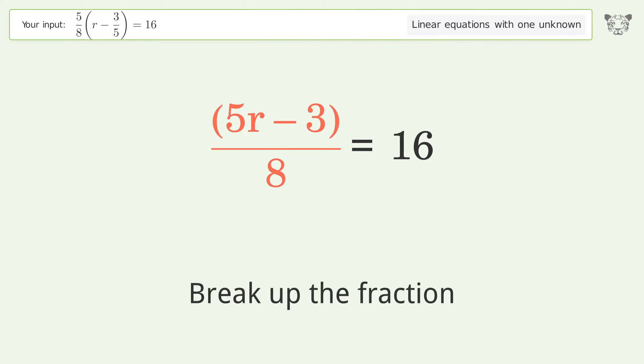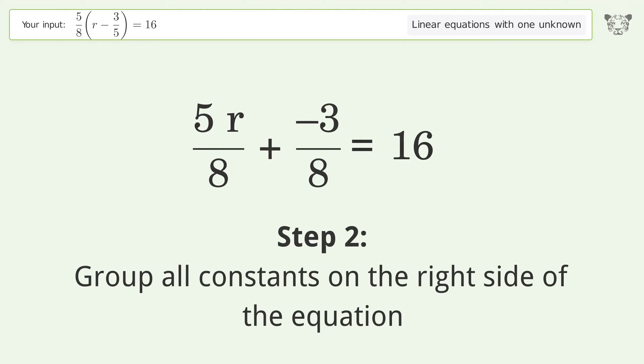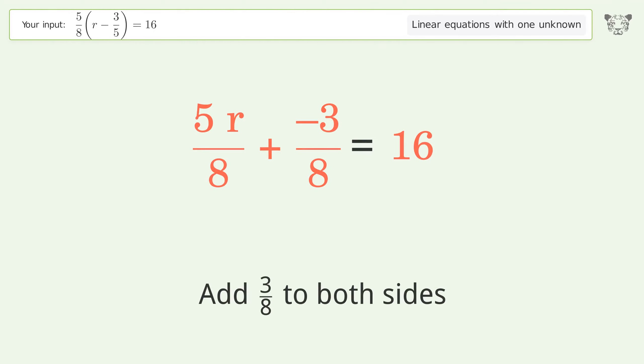Break up the fraction. Step 2: Group all constants on the right side of the equation. Add 3 over 8 to both sides.